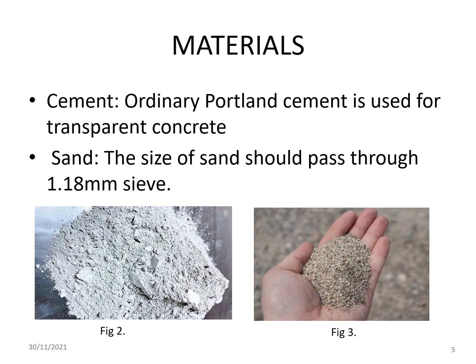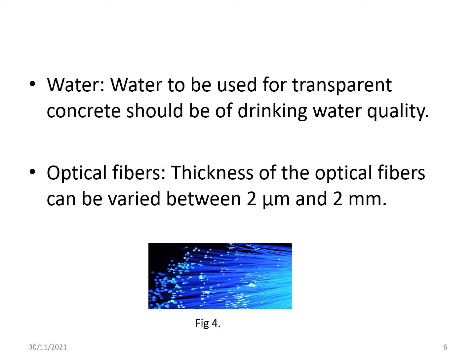Materials used in LitraCon: Ordinary Portland cement and sand are used for transparent concrete. The size of sand should pass through a 1.18 mm sieve. Other materials are water and optical fibers. Water used should be of drinking water quality, and optical fibers can vary in thickness between 2 µm to 2 mm.